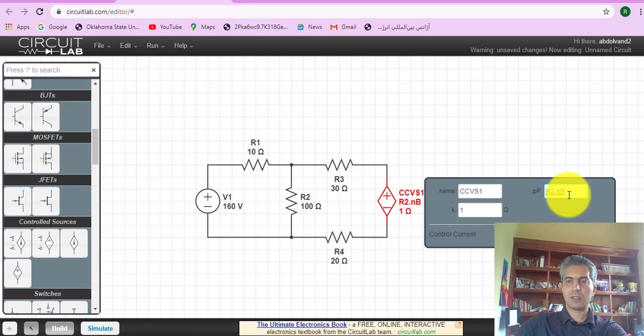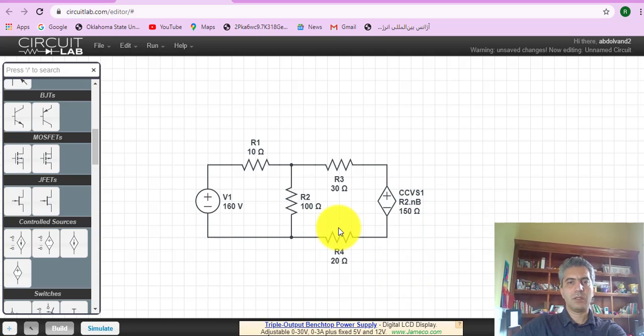So what this means is that the current is entering into node B which is down here, and so I sigma, and that problem was defined this way. So now the value was 150 times I sigma, and that concludes our definition of the circuit.